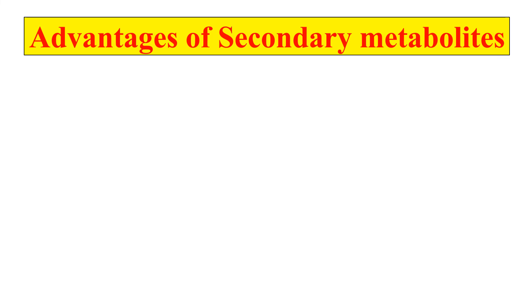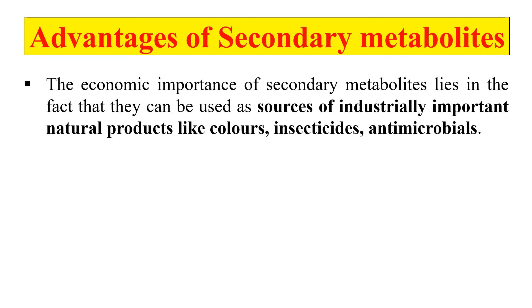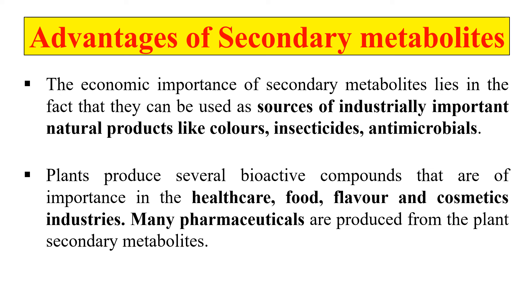Now, what are the advantages of these secondary metabolites — why are we producing them? They are a very important source of many industrially important compounds like colors, insecticides, antimicrobials, fragrances, and therapeutic agents. These secondary metabolites can be used in many industries. In human healthcare, they also produce therapeutic proteins or pharmaceutical products. They may also be important in healthcare, food and flavoring agents, and the cosmetic industry. These are the advantages of secondary metabolites — that is why we are producing them.